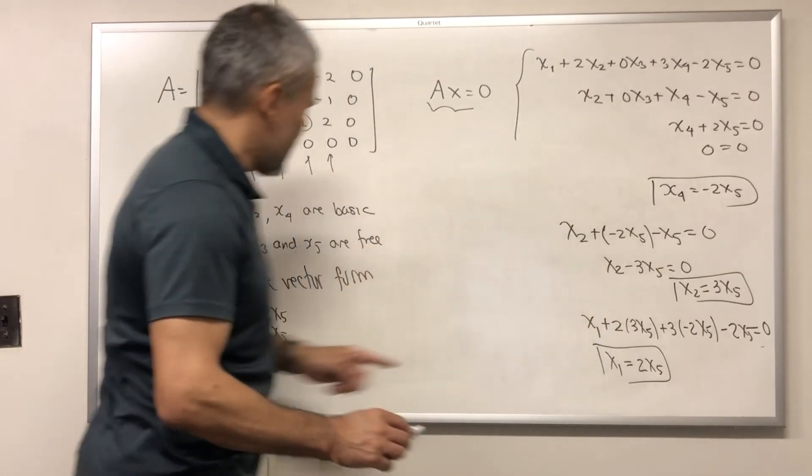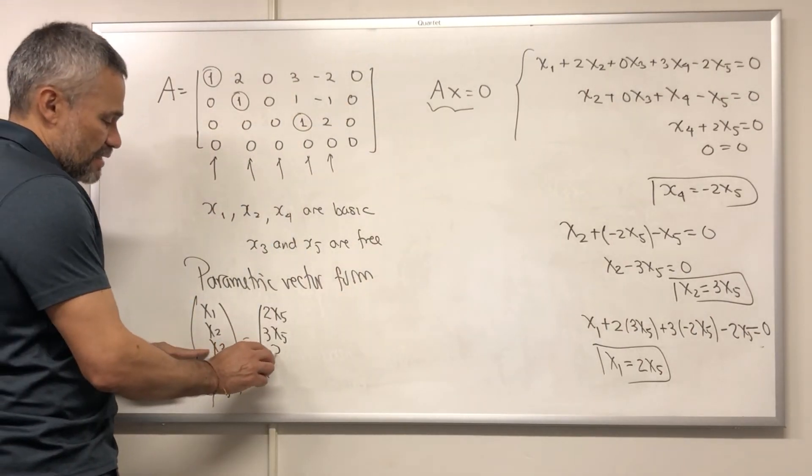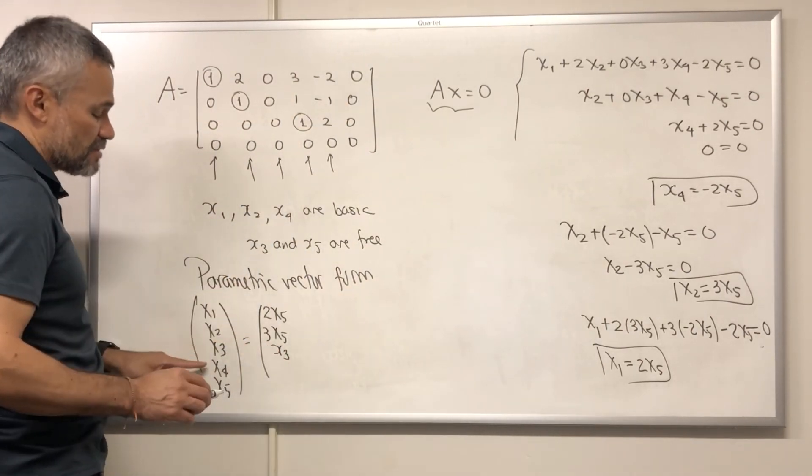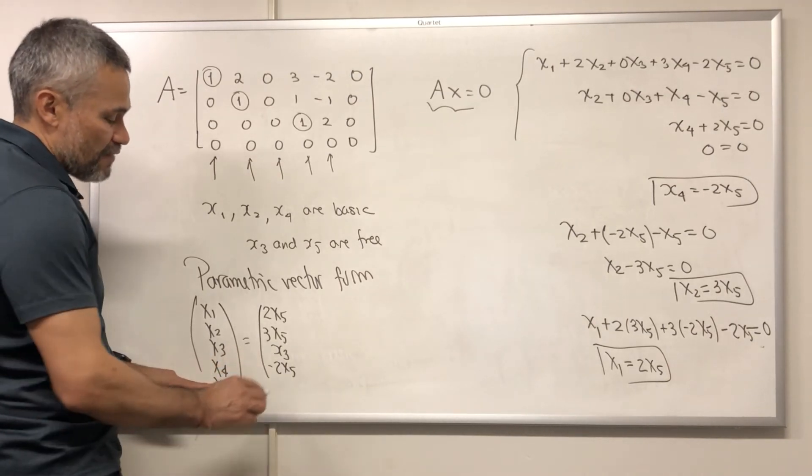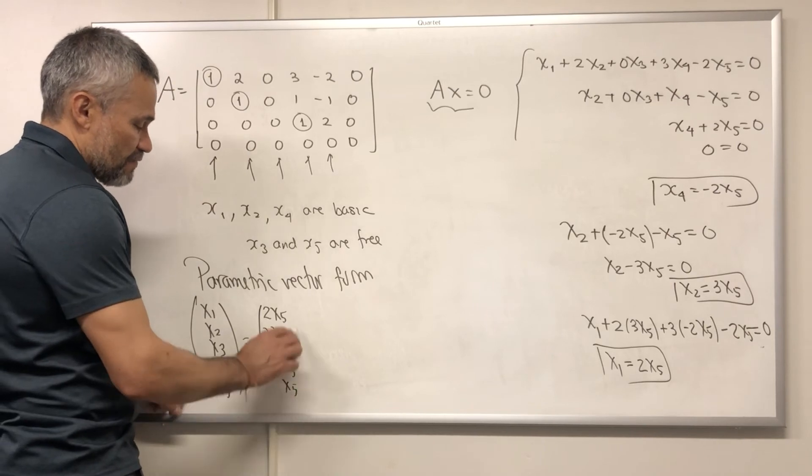Here. X3 is free. Since X3 is free, you just write X3. X4 is negative 2X5. And X5 is free, then you just write X5.